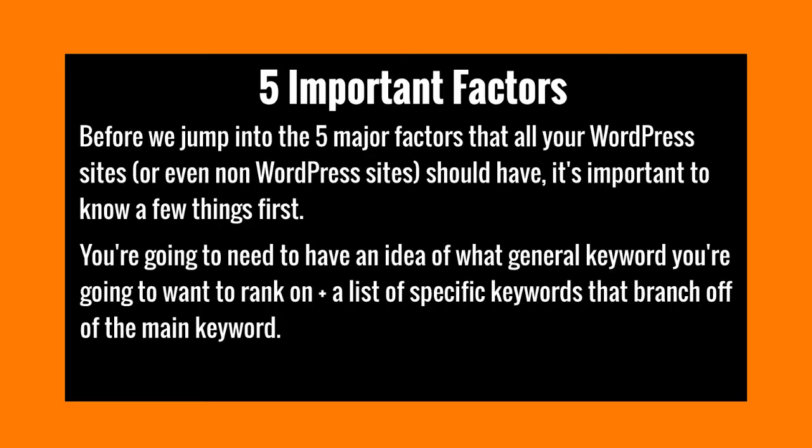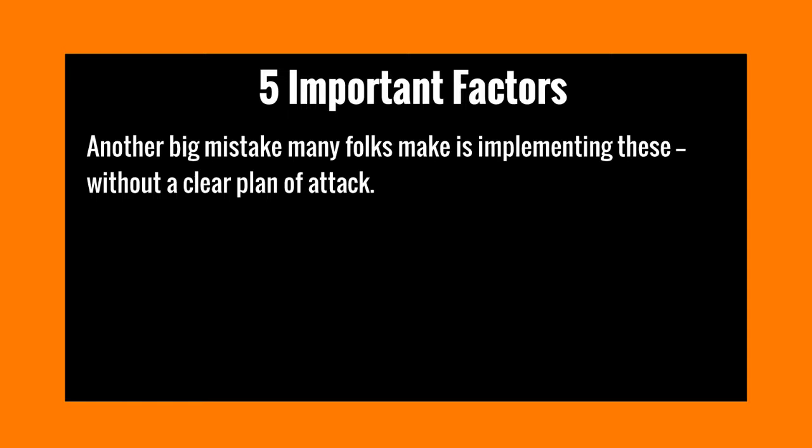You're going to need a general idea of, number one, the general keyword that you want to rank on, and number two, a list of specific keywords that branch off of that main keyword. Don't worry if you don't have that now — I'm going to give you a step-by-step technique to help you figure that out. A big mistake many folks make is implementing these without a clear plan of attack, and that's why I'm breaking things down in this manner.